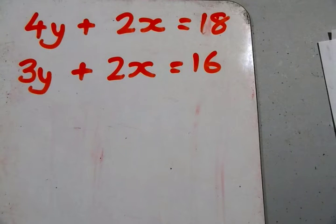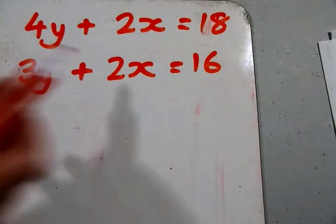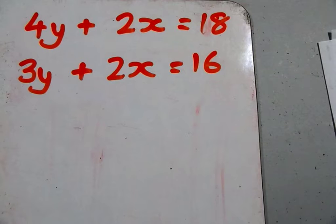First we look for the coefficients that are the same. 4 and 3, they're not the same. 2 and 2, they are the same.